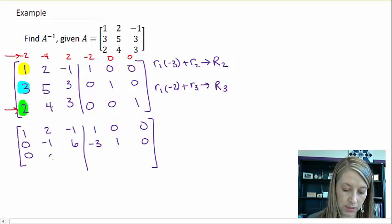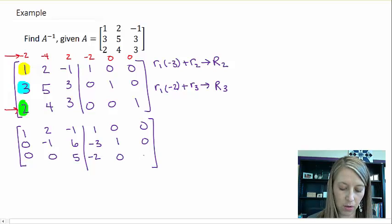So 0, 0, 5, negative 2, 0, 1. And that even helps me out because my next step would be to get a 0 right here. So that's actually already done. After that, I want to get a 1 where this 5 is.